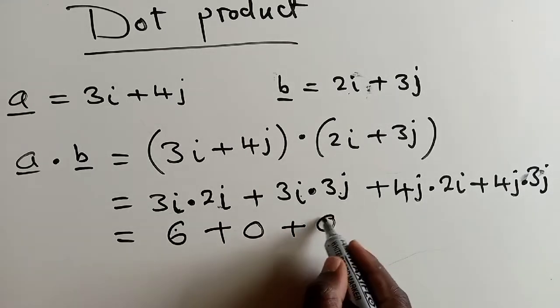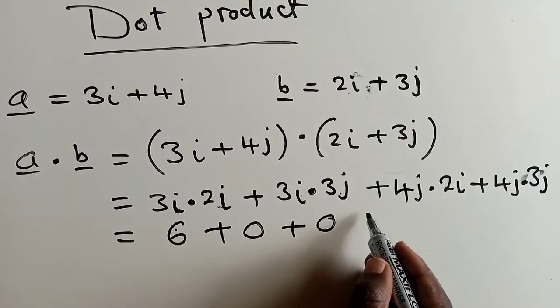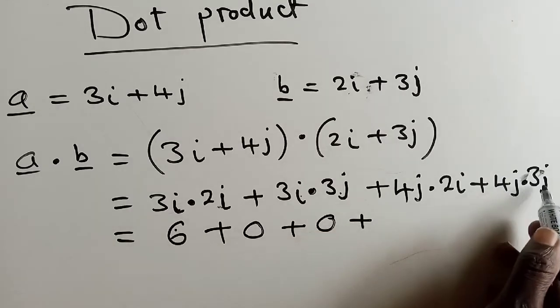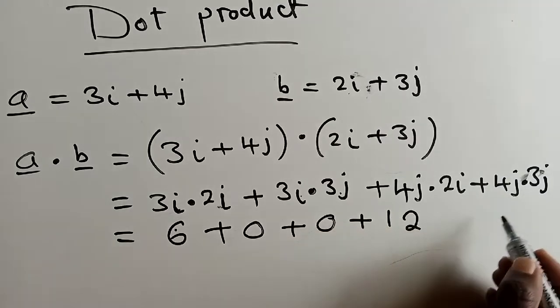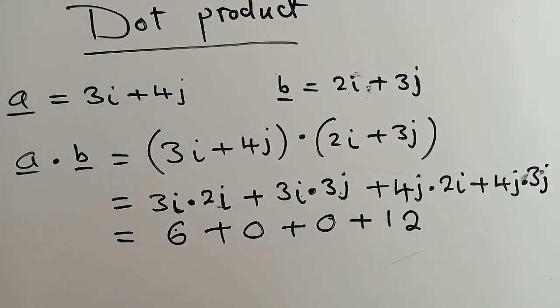This applies to this one. There is a J and there is an I. They will just give you a 0. Here, we can multiply. It will give us a 12 because J and J, they are the same.